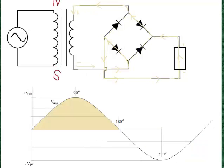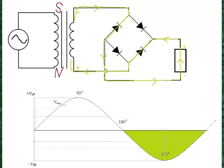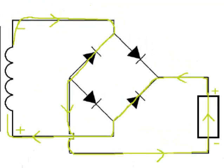So this is the positive alternation path. The current is going the same direction through the device, so the polarity is the same. With the negative alternation of the AC waveform, it is still going through the device in the same direction. It's using two different diodes of this full-wave bridge rectifier, powering the device with the same polarity.